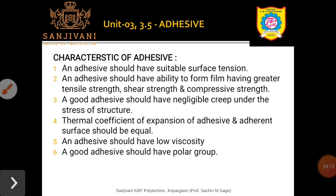The second characteristic is that an adhesive should have the ability to form a film having greater tensile strength, shear strength, and compressive strength. The greater the tensile strength, shear strength, and compressive strength of the adhesive film, the greater is the strength of the bond. Tensile strength means the ability to carry the load — better tensile, shear, and compressive strength results in a better strength of bond.